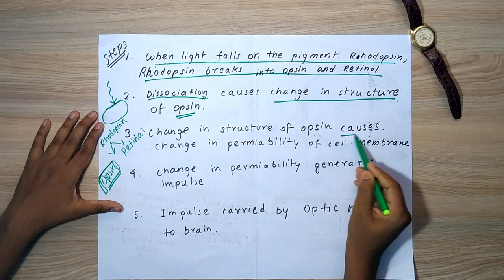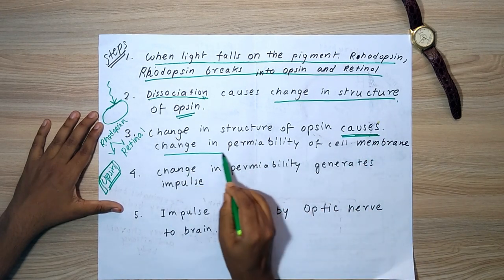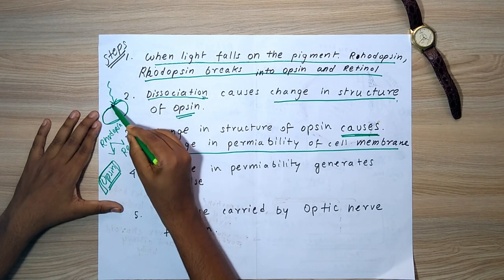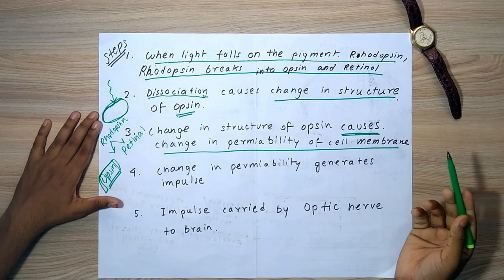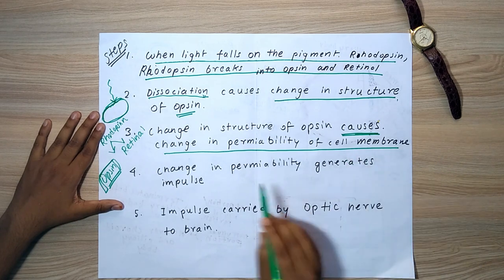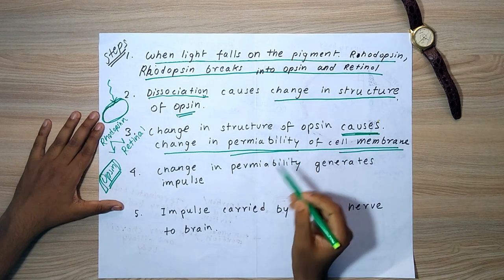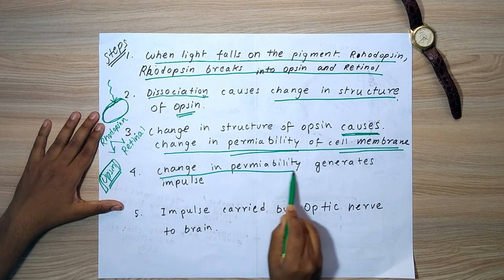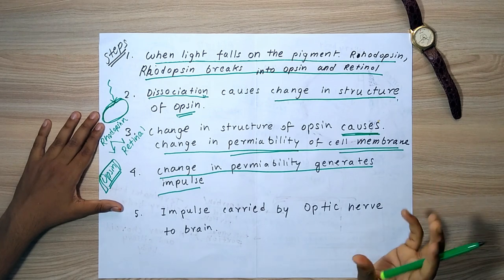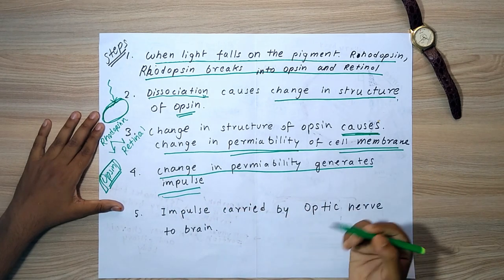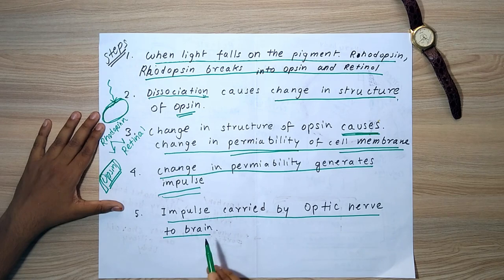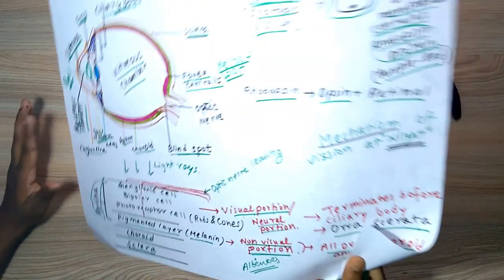The change in structure of opsin causes a change in the permeability of the cell membrane of the rod cell. This change in permeability generates an impulse, which is then carried by the optic nerve to the brain.